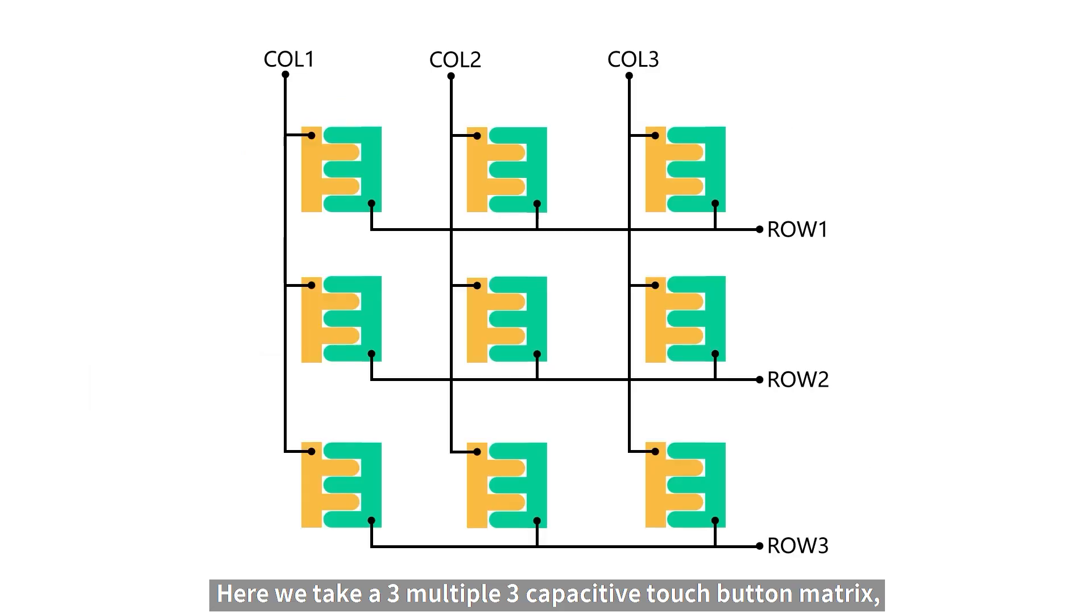Here, we take a 3x3 capacitive touch button matrix as an example to explain the logic of software detection. Each pad consists of two parts, which are connected to two touch conversion channels respectively. Each touch conversion channel is connected to three pads, and the connection order is crossed to achieve a mesh pattern.